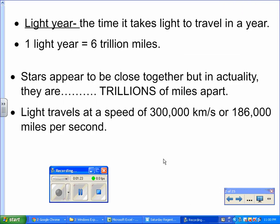In terms of astronomy, just very quickly, a light year is the time it takes light to travel in a year. One light year is equal to 6 trillion miles. So in reality, stars out in space are actually trillions of miles apart.